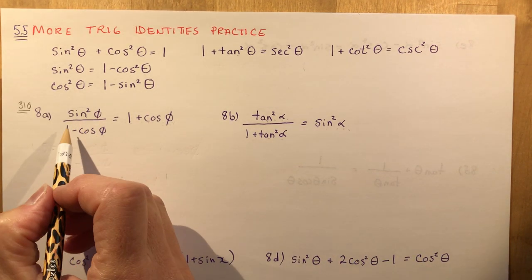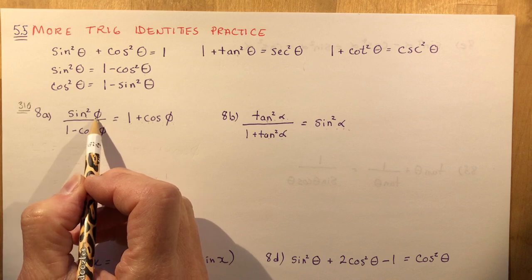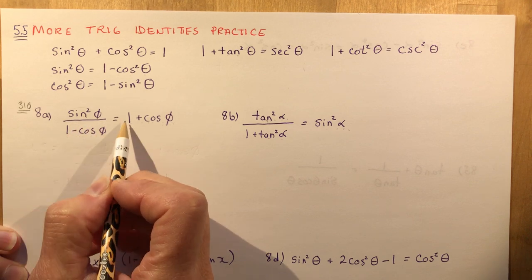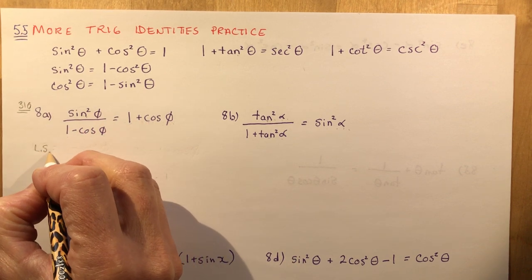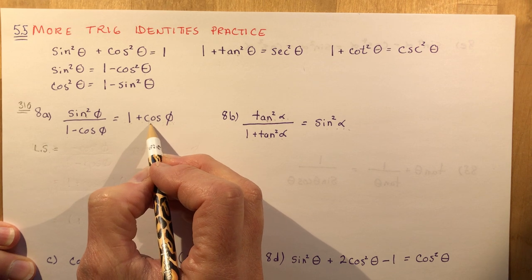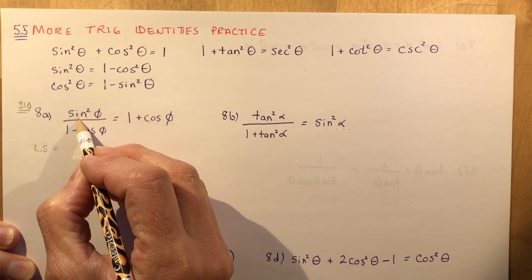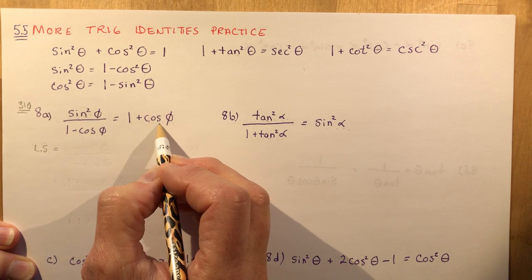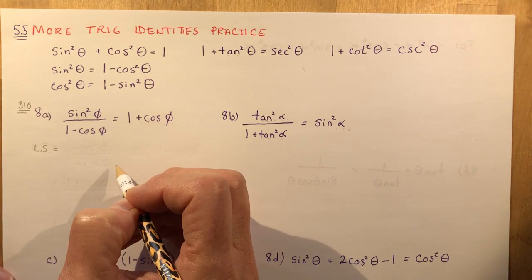So 8a: we have sine squared phi — this is the Greek symbol phi, not the null set, just the symbol phi — equals (1 minus cos phi)(1 plus cos phi). The right side is the easier side; the left side is the most difficult, so I'm going to start with the most difficult side to simplify it. Note that on the right side I only have cosine, so that's a clue that you've got to change sine squared phi into something that has a cosine in it.